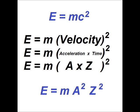From E equals mc squared, we go to E equals mass times velocity squared, which goes to E equals mass times acceleration times time squared, then to E equals mass times a times z squared, and finally we get energy equals mass times acceleration squared times time squared.